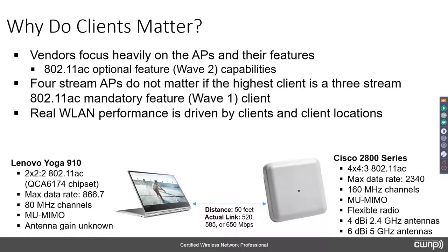Therefore the real world has already come down from 2340 to 650 Mbps. The fact that the AP spec sheet says 2340 while we're really doing 650 tells us something important: real wireless LAN performance is driven by clients and client locations. We've lost basically 75% of our data rate going from 2340 down to approximately 585 Mbps average — and we're only talking about raw 802.11 data rates, not throughput.